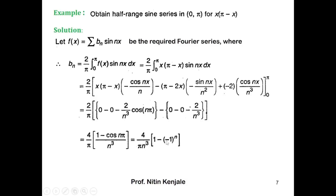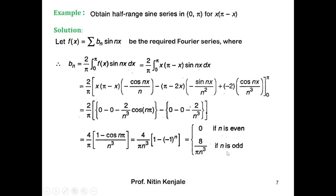Since cos(nπ) equals (−1)^n, b_n becomes 4/(πn³) times (1 − (−1)^n). Since n takes values from 1 to infinity: if n is even, (−1)^n equals 1, so 1 − 1 equals 0, meaning b_n equals 0 whenever n is even. Whenever n is odd, (−1)^n equals −1, so 1 − (−1) equals 2, giving b_n equals 8/(πn³) whenever n is odd.